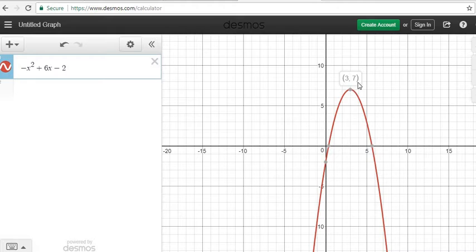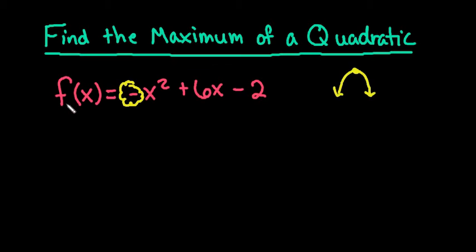So our maximum would be 7 when x is 3. So let me go ahead and write that down. So we would have a max of 7 when x equals 3.